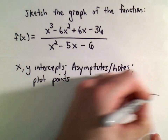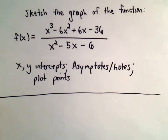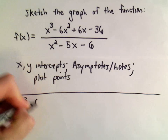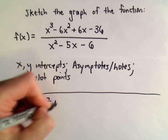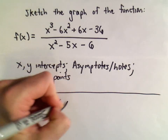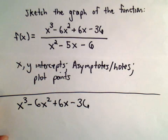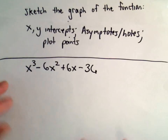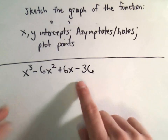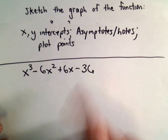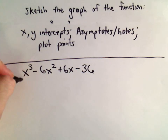The first thing I'm going to do is factor this function — factor the numerator and the denominator. So the numerator is x cubed minus 6x squared plus 6x minus 36. Usually when I see four terms, the first thing I think of is factoring by grouping.